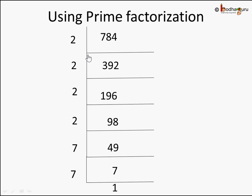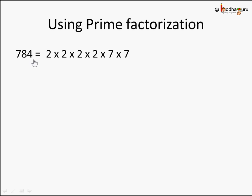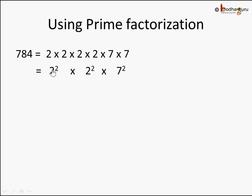Then 7 divided by 7 is 1. So using the prime factorization method, 784 is equal to 2 into 2 into 2 into 2 into 7 into 7. We can bundle each pair: 2 into 2 is 2 squared, the next 2 into 2 is another 2 squared, and 7 into 7 is 7 squared. So 784 is nothing but 2 squared into 2 squared into 7 squared.